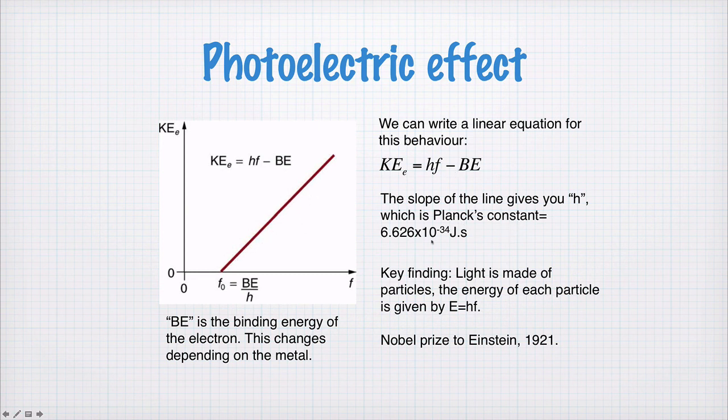The slope, as I said, gives you H, which is Planck's constant, which is about 6.626 by 10 to the minus 34 joules times seconds. And the key finding here is that light is made of particles, and the energy of each particle is given by E equals to HF.